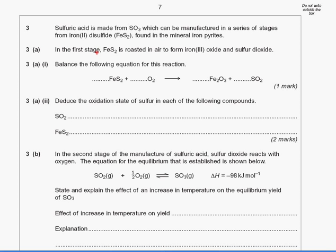Sulfuric acid is made from SO₃, which can be manufactured in a series of stages from iron disulfide. Now looking at this, I'll just switch my pen on. The kind of clues you need to look out for is straight away iron two. So I kind of know that this here is Fe²⁺. Found in the mineral iron pyrites, in the first stage FeS₂ is roasted in air to form iron three. So we're going from Fe²⁺ to Fe³⁺. It's losing electrons, that's oxidation.